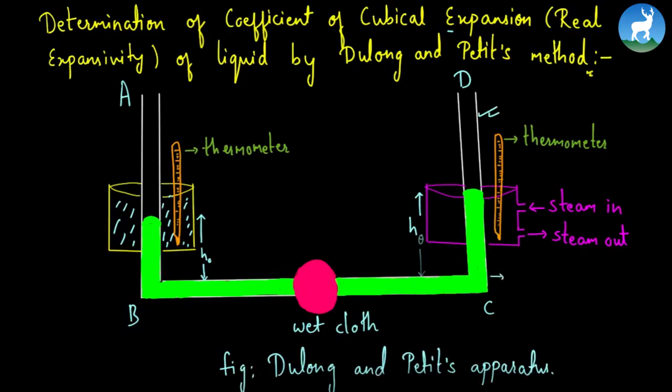This apparatus has a glass tube for the liquid whose cubical expansivity we want to measure. There is a slide and an arm to take measurements. The height is measured using this slide.